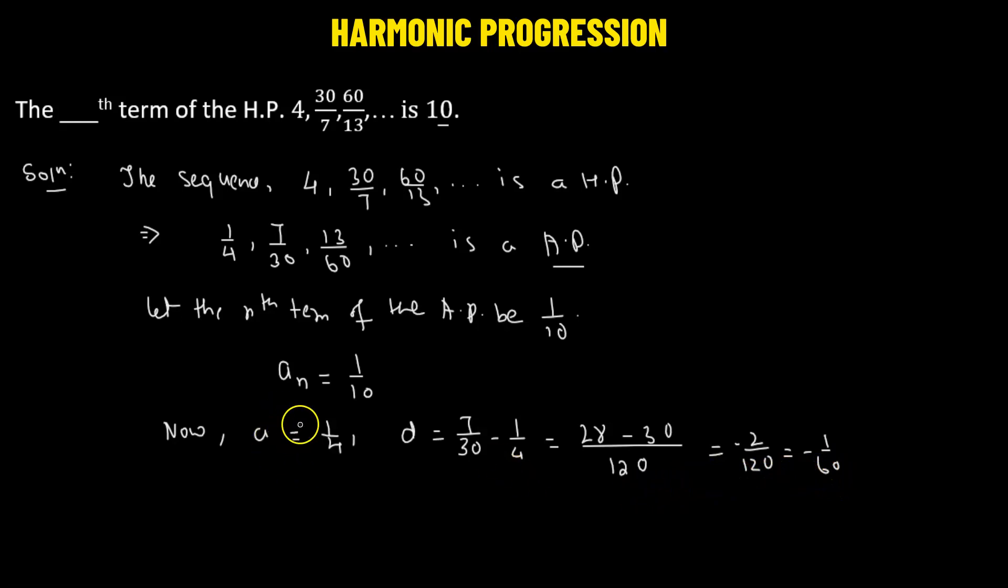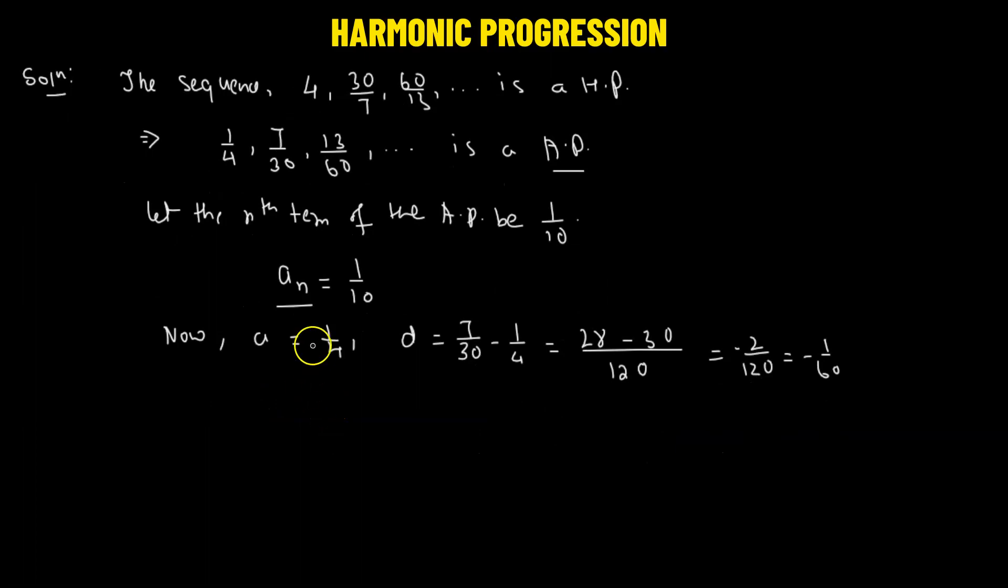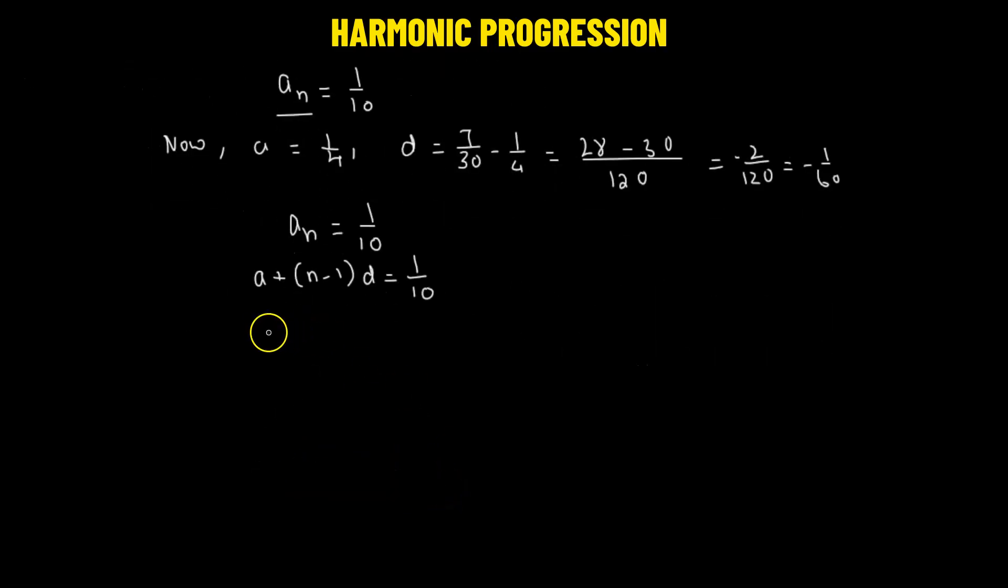Now that we have the common difference as well as the first term, let's find out the n value of the given arithmetic progression. So AN is 1 over 10. The value of AN is A plus n minus 1 times the common difference D. So this will be equals to 1 over 10. We'll substitute the value of A with 1 over 4 plus n minus 1 times the common difference, which is negative 1 over 60.